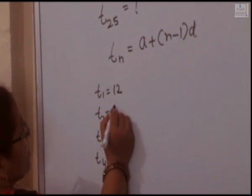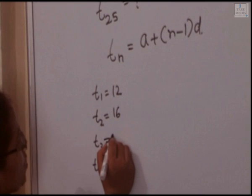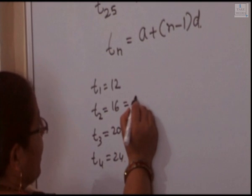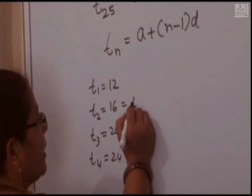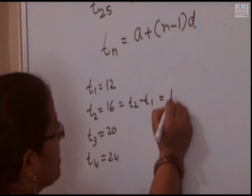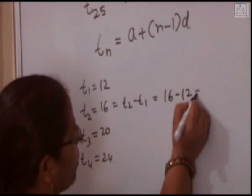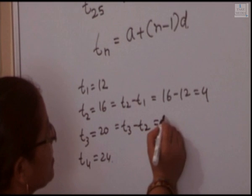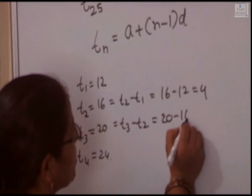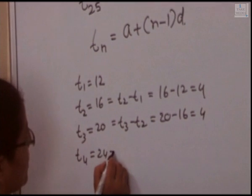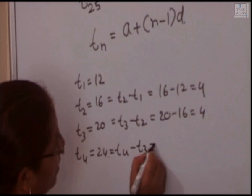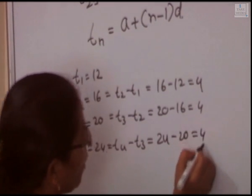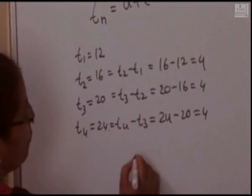T1 is 12, T2 is 16, T3 is 20 and T4 is 24. The common difference: T2 minus T1 is 16 minus 12 equal to 4. T3 minus T2 is 20 minus 16 equal to 4. T4 minus T3 is 24 minus 20 equal to 4. So the common difference is 4.